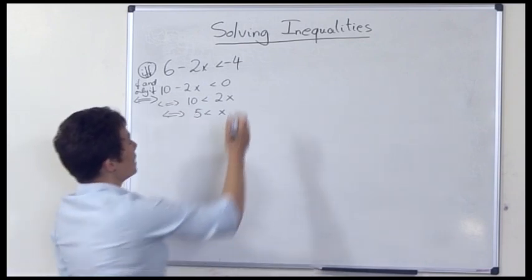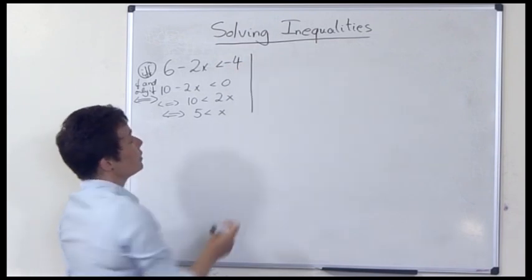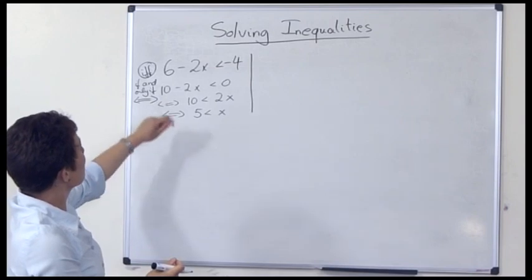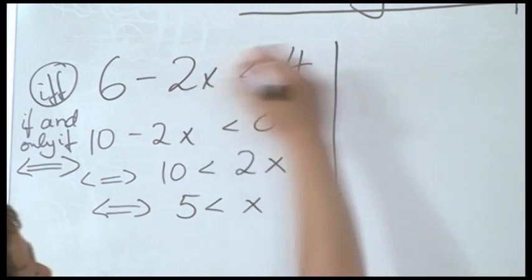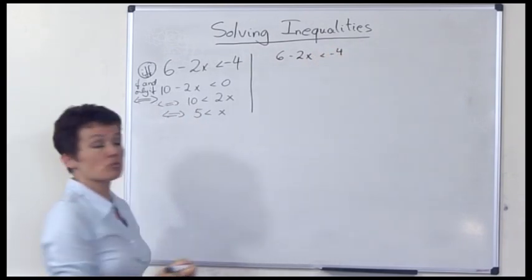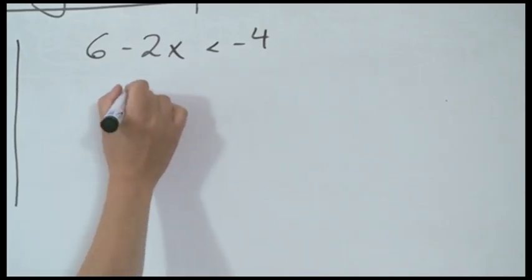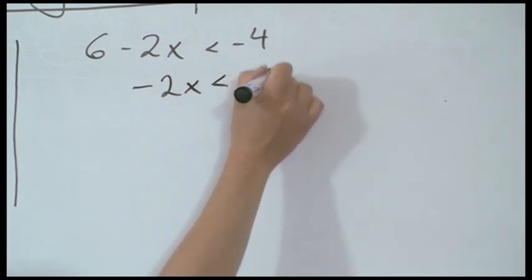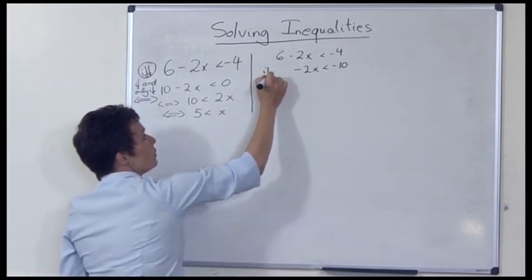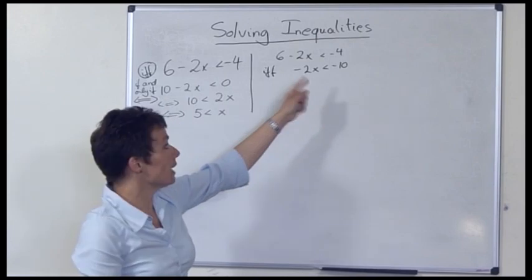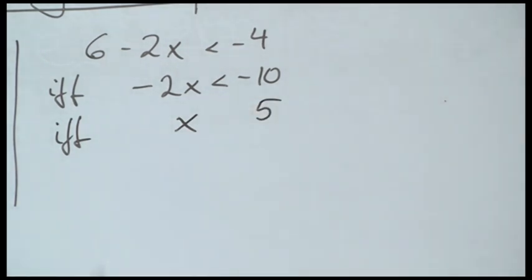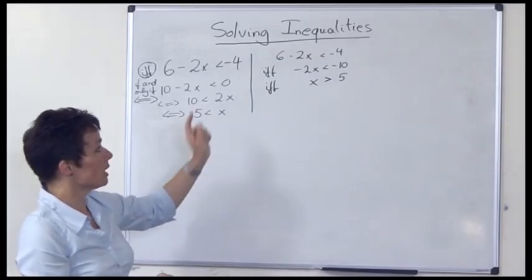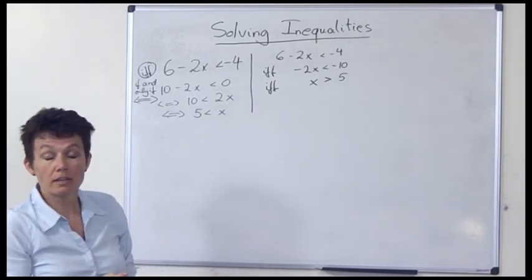Now if you take this inequality, I could have done something slightly different. I could have, for example, subtracted the 6 as a first step. So I could have taken 6 minus 2x less than negative 4 and subtracted 6 on both sides. This would give us negative 2x less than negative 10. And again, as an if and only if, now I could divide both sides by negative 2. And we know that if we divide by a negative number, we need to change around the inequality symbol. And you see you get the same solution — x greater than 5.